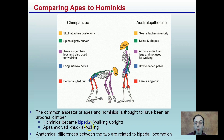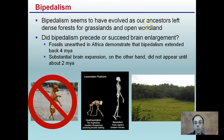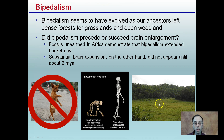The anatomical differences between the two are related to bipedal locomotion. When you're walking upright, certain structures shift in shape to make it more efficient, compared to knuckle walking's hunched-over look. Bipedalism seems to have evolved as our ancestors left dense forests for grasslands and open woodlands. In among the trees, knuckle walking might be advantageous, but in open fields, upright bipedalism is definitely favored.